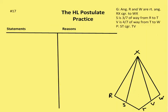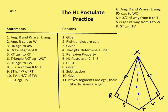In the next proof, I'm given that angle R and W are right angles, RX is congruent to WX, and S is three-sevenths of the way from R to T, while V is four-sevenths of the way from T to W. I want to prove that ST is congruent to TV. I'll mark up the diagram: the two right angles are XRS and XWV, and XR is congruent to XW.